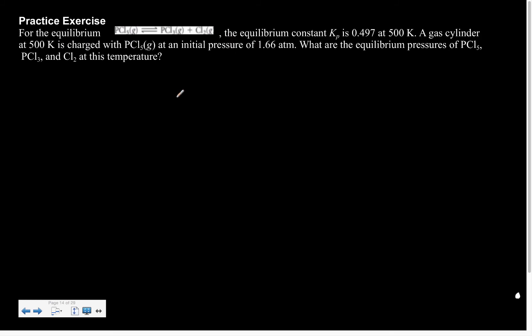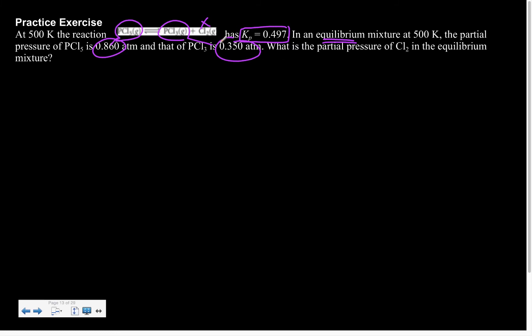Next up, for the equilibrium, the equilibrium constant is this. A gas cylinder at 500 K is charged with PCl5 and an initial pressure of 1.66 atm. And I want to know my equilibrium pressures of everybody else. So here, we are monitoring change. Whereas here, there's no change. We're already at equilibrium and we want to know the last piece.